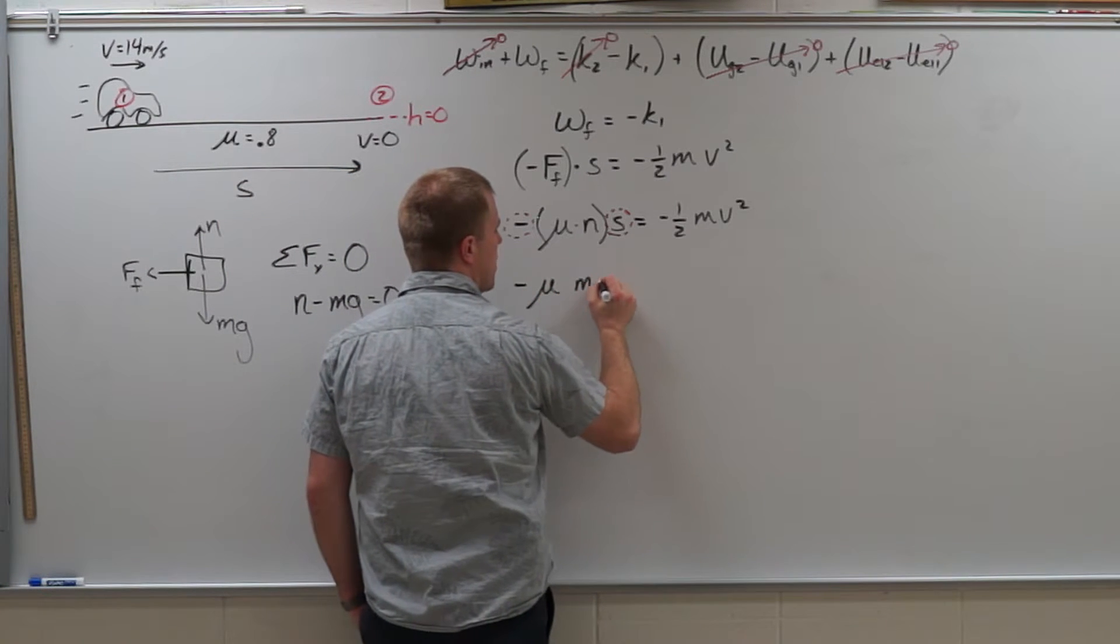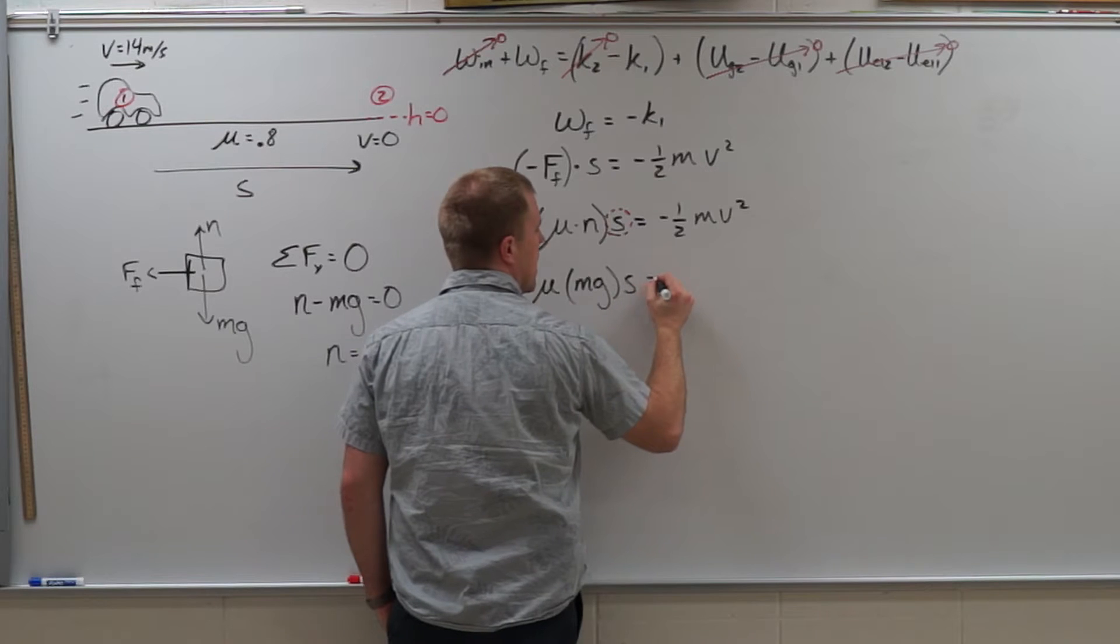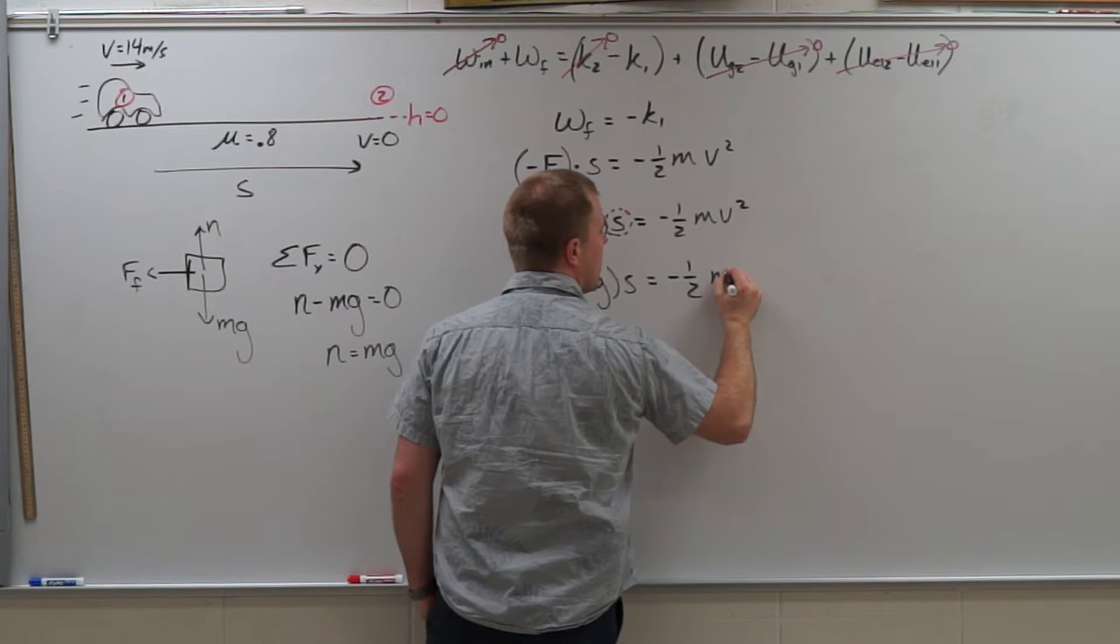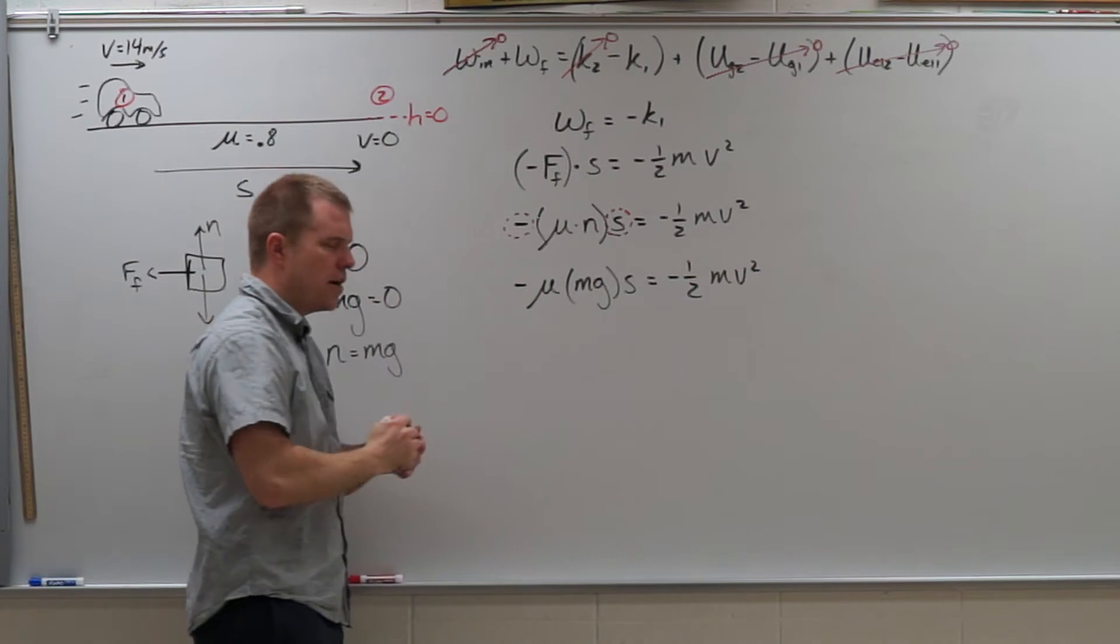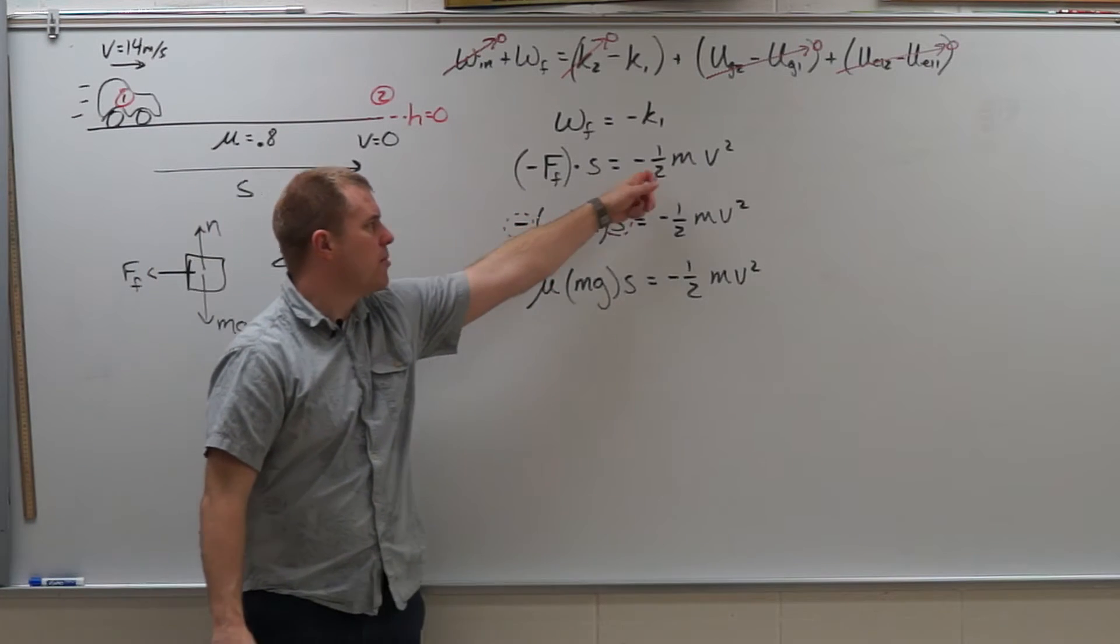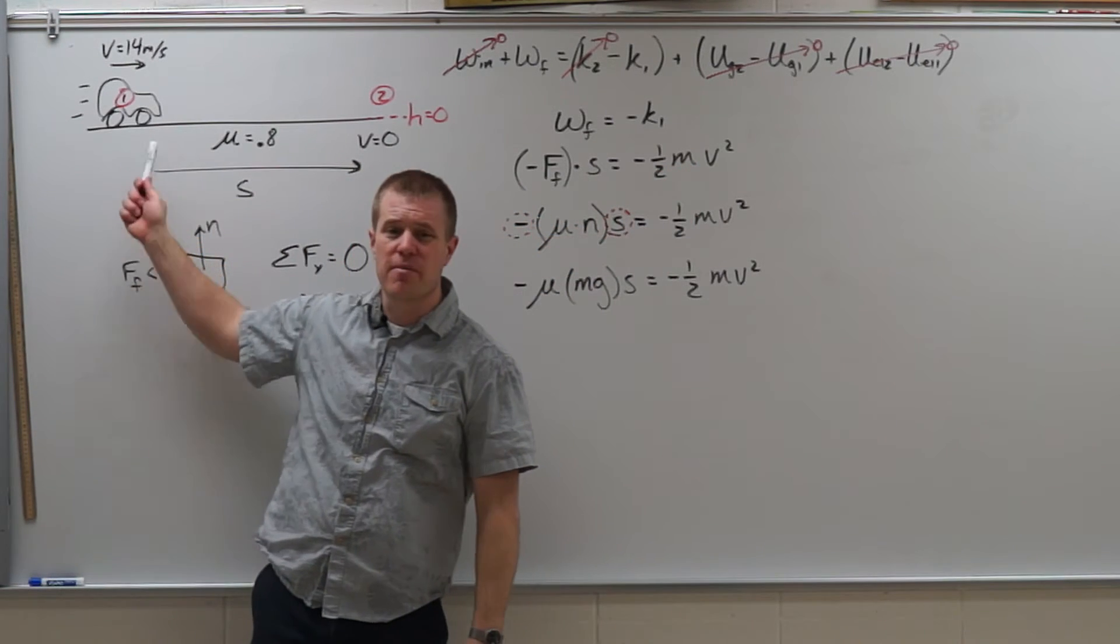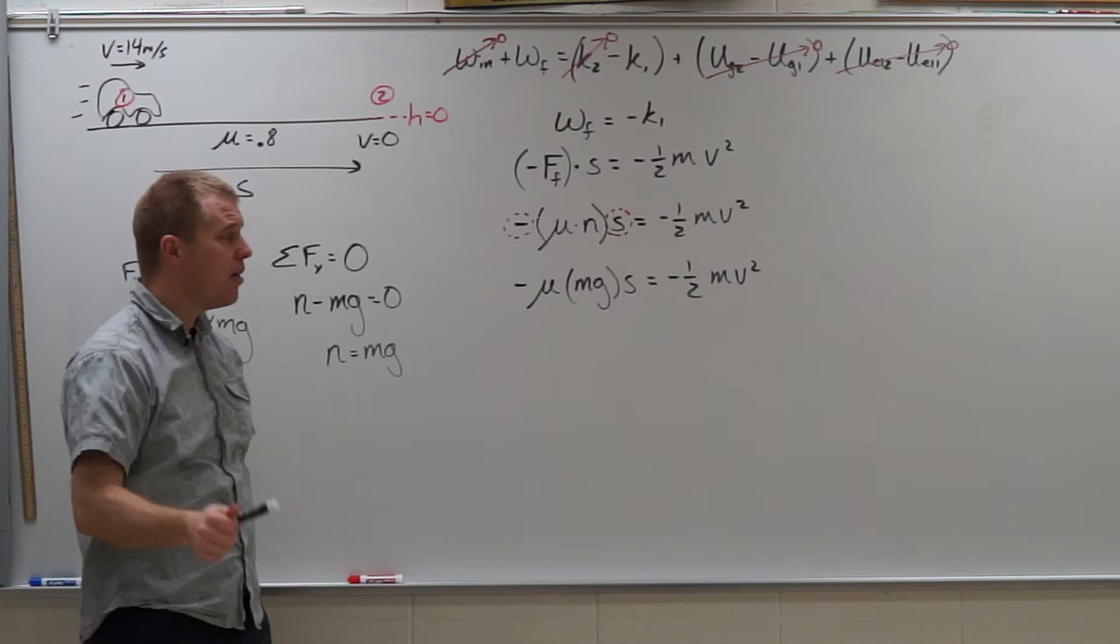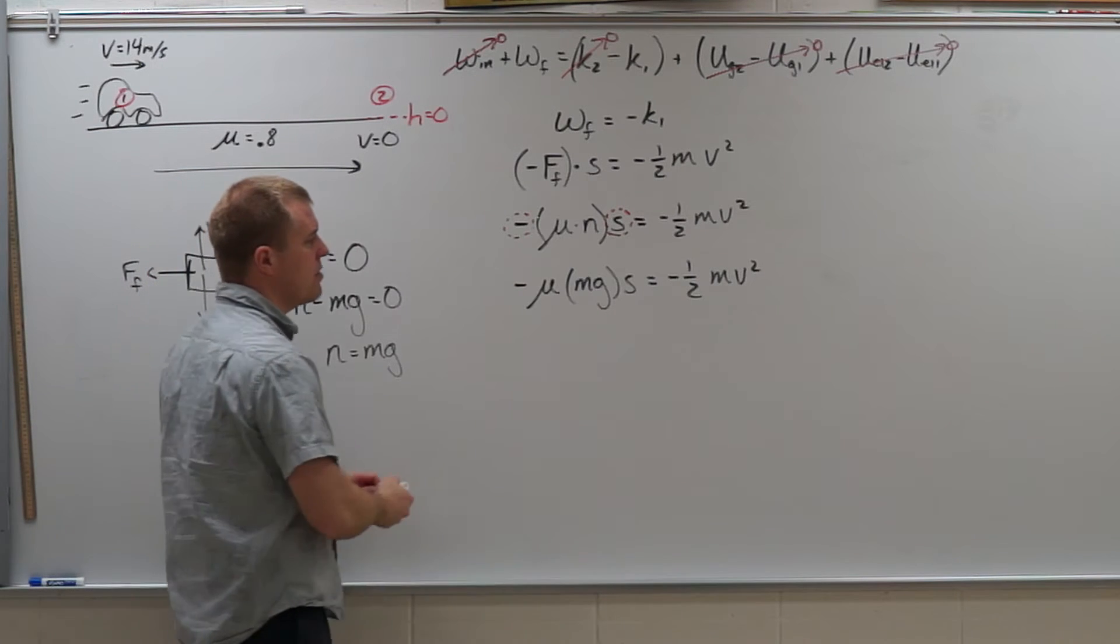So I have negative μmgs equals negative 1/2 mv squared. And if you were starting off at these substitutions and you saw this m over here and you said hey, you didn't know the mass of the car, it's okay. Keep solving. Eventually it will cancel out for you as it does here.